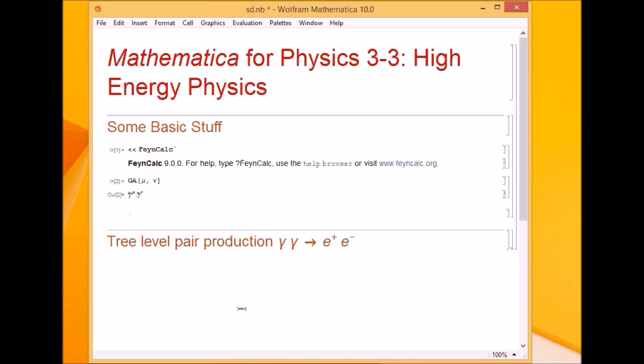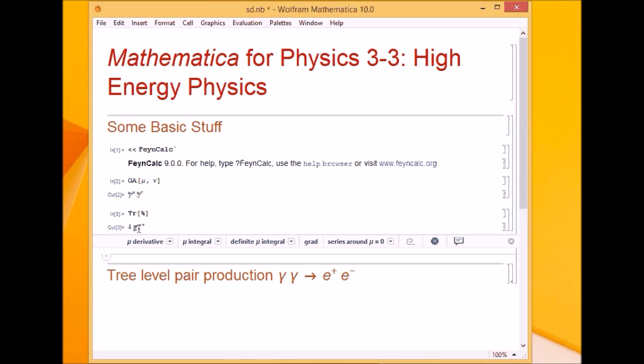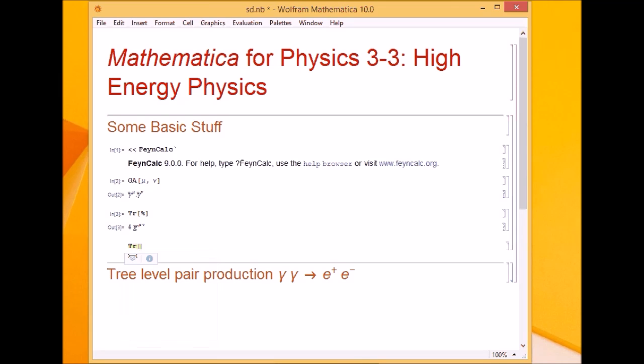If I want the trace of two gamma matrices, I know trace of two gamma matrices should be four times the metric tensor. If I give the TR, which is a command inside the FeynCalc package which calculates the trace of gamma matrices and metric and other stuff, it gave you four times the metric tensor, which is what it is.